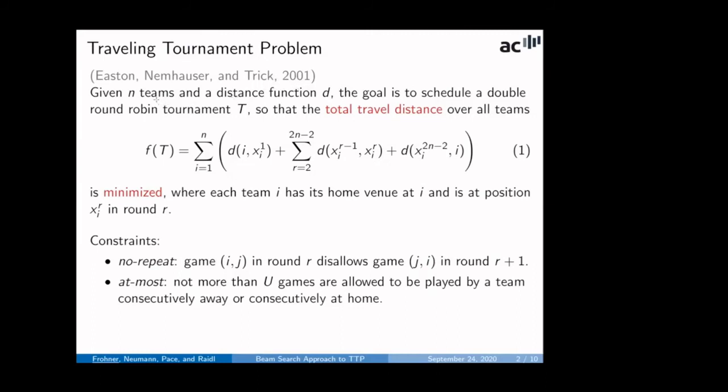The goal is we are given N teams and a distance function D. And we need to schedule a double round robin tournament where every team plays against each other team twice, once at home and once away. So that we minimize the travel distance for all teams with the assumption that every team starts and ends at its home venue and goes directly from the venue in the current round to the venue in the next round. Two constraints are added. The no-repeat constraint and the at-most constraint. The latter limits the number of consecutive away and consecutive home games to U. Most of the time in literature this is three.